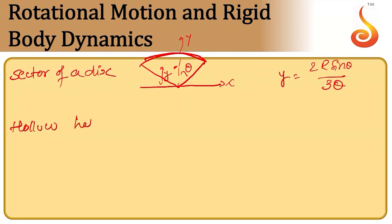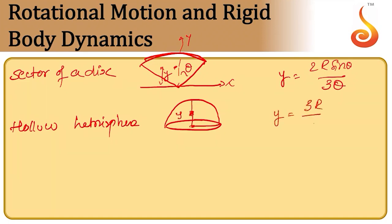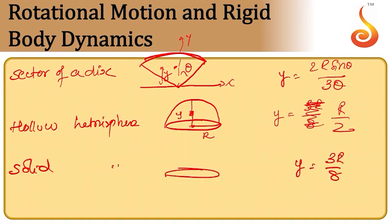For a hollow hemisphere, the center of mass is at a height y equal to r/2. For a solid hemisphere, y is given by 3r/8. Remember, these are measured from the center.